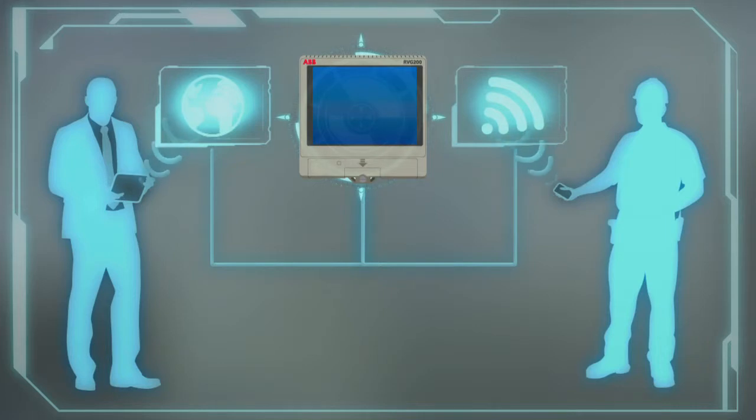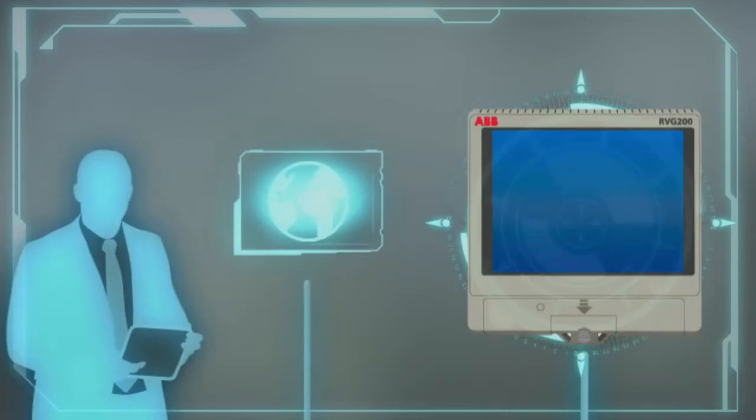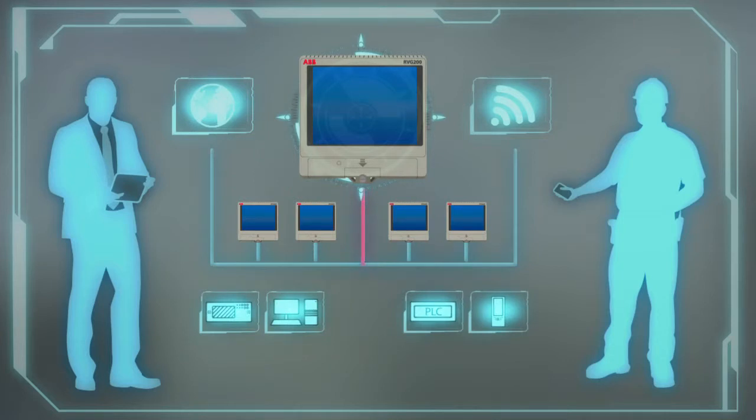With the RVG200 you can remotely monitor your process with the integrated web server using a PC or mobile device, set up email notifications of process alarms or critical process events, collect archived process data for review, and use Modbus TCP to communicate real-time process data with other devices in a control system.